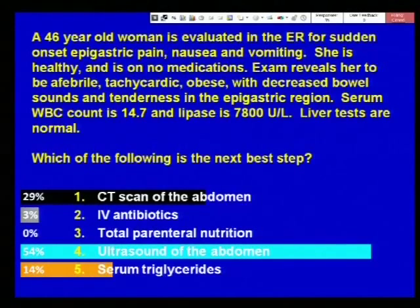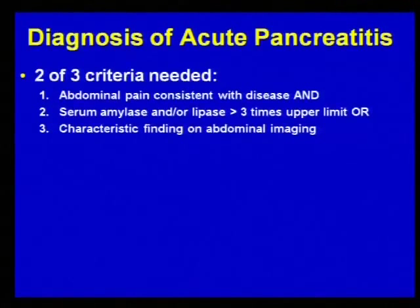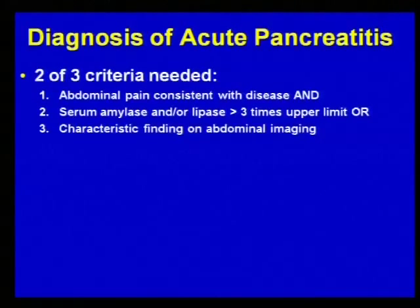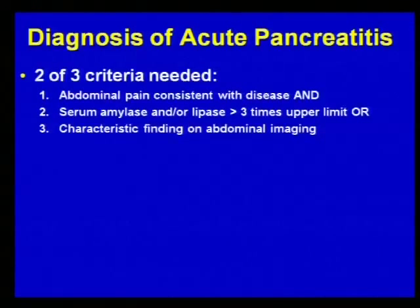She certainly has pancreatitis based on her clinical features and elevation of her pancreatic biomarker. To make a diagnosis of acute pancreatitis you really need two of three criteria: abdominal pain consistent with the disease, plus either a serum amylase and/or lipase greater than three times the upper normal limit, or characteristic findings on abdominal imaging. Based on this case, she had consistent clinical features and her lipase was well above the upper limit of normal by more than three times, so CT imaging is not needed to confirm the diagnosis.